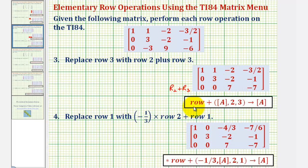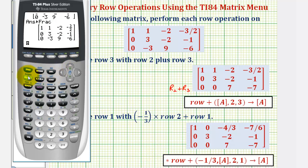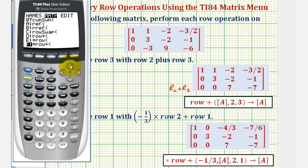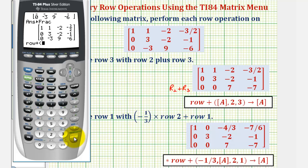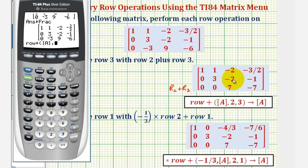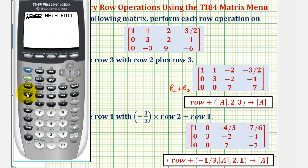This time we'll use the row plus command. So we'll press second, matrix, right arrow for math, up to row plus, which is option D, enter, matrix A — so second, matrix, enter — comma. Now let's pause: we need to enter two, comma, three. This will add these two rows together and store the result in row three. If we entered three, comma, two, we'd add row three and two and store the result in row two — so this order is important. So two, comma, three adds those two rows and stores the result in row three. We want to store the result in matrix A: press store, second, matrix, enter, enter. And notice how our third rows are the same.